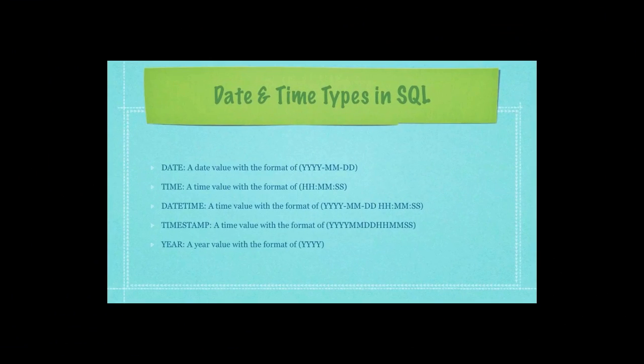Then we have also some different data types available to you in regards to date and time. And you see down here, here's the timestamp. Basically, it is a time value with the format of four numbers representing the year, two representing the months, two representing days, two representing hours, two representing minutes, and finally, two representing seconds. And that's what all that information means.